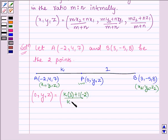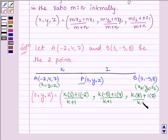and we have k into -5 plus 1 into 4 upon k plus 1 and last we have k into 8 plus 1 into 7 upon k plus 1